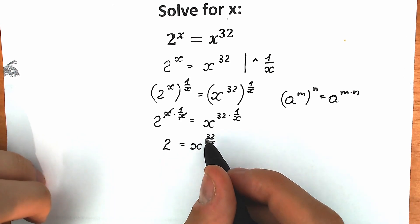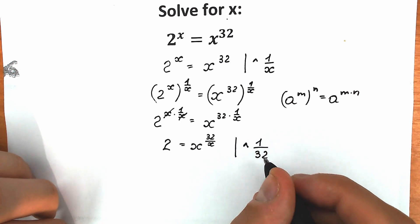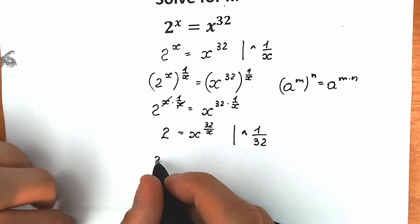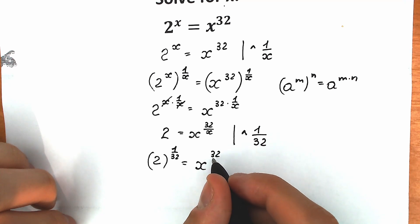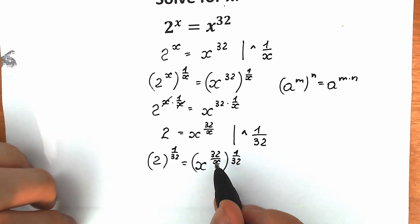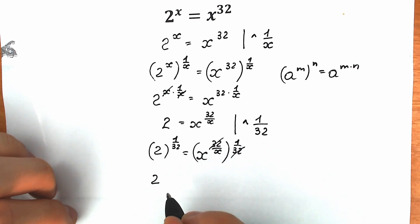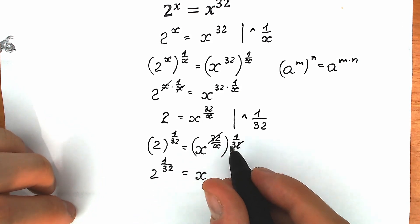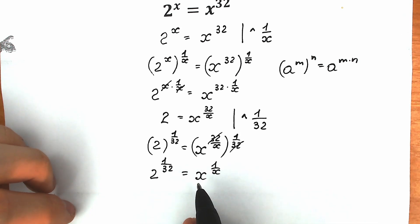We need to group constants on the left and variables on the right. When we raise both sides to the power 1 over 32, we can cancel the 32. So we have 2 to the power 1 over 32 equal to x to the power 32 over x, raised to the power 1 over 32. Multiplying the fractions 32 over x times 1 over 32 cancels the 32, giving us 2 to the power 1 over 32 equal to x to the power 1 over x.